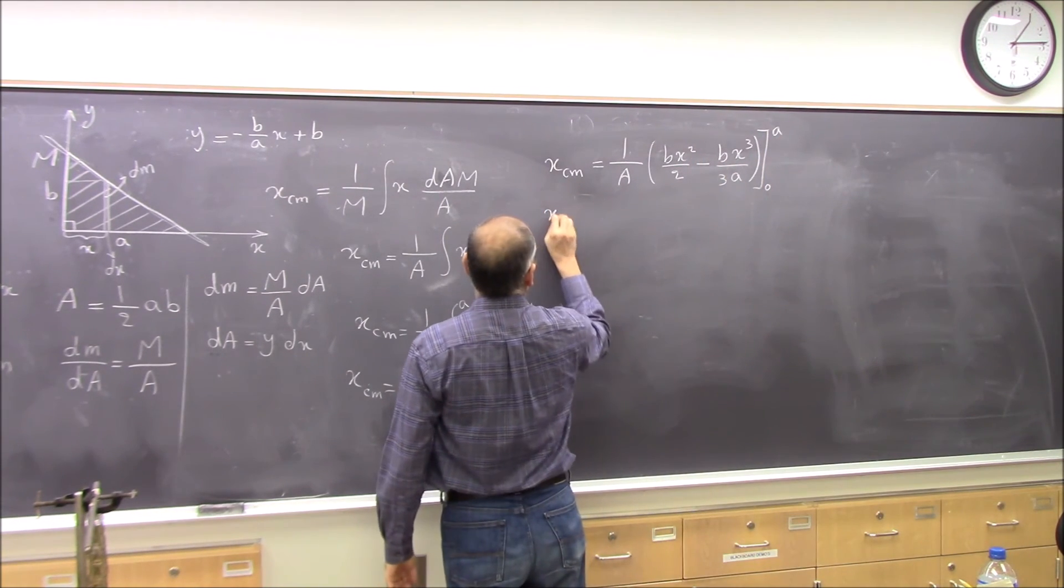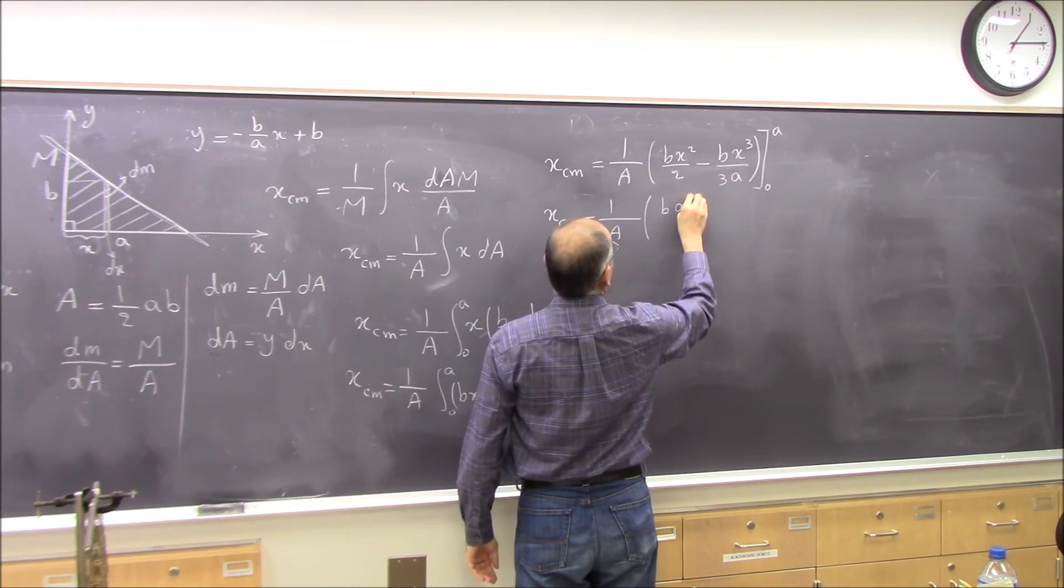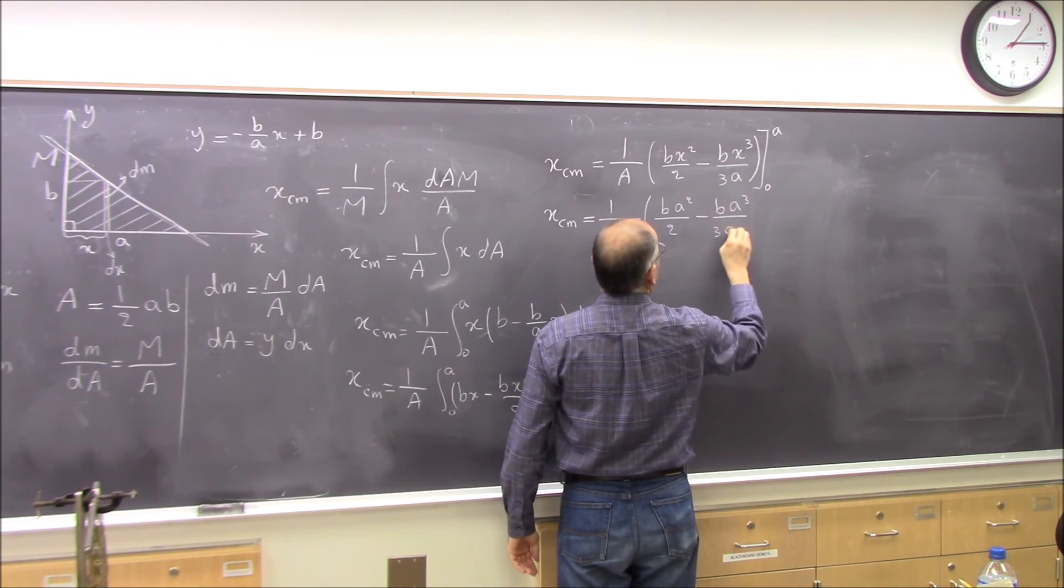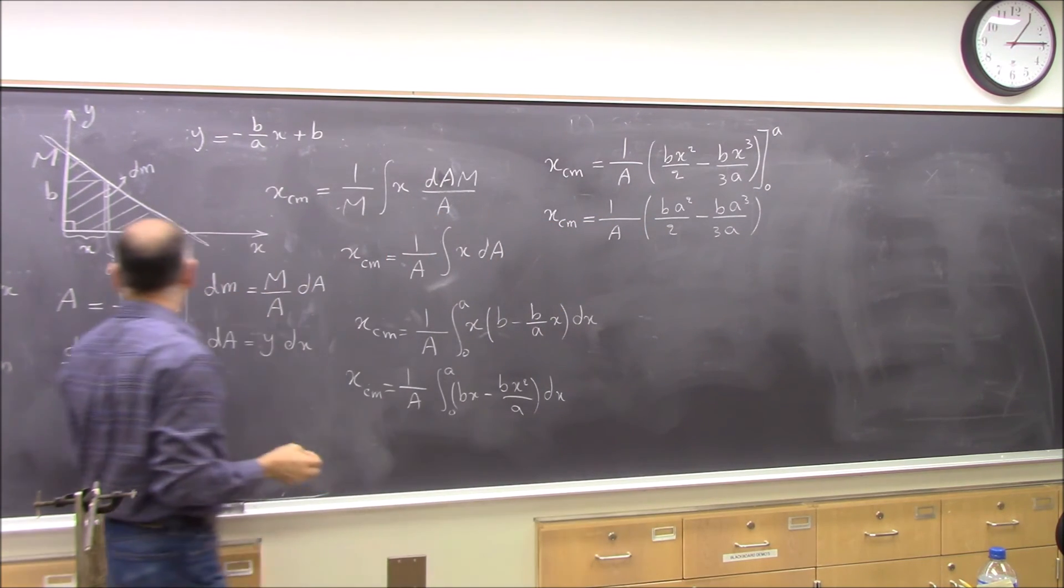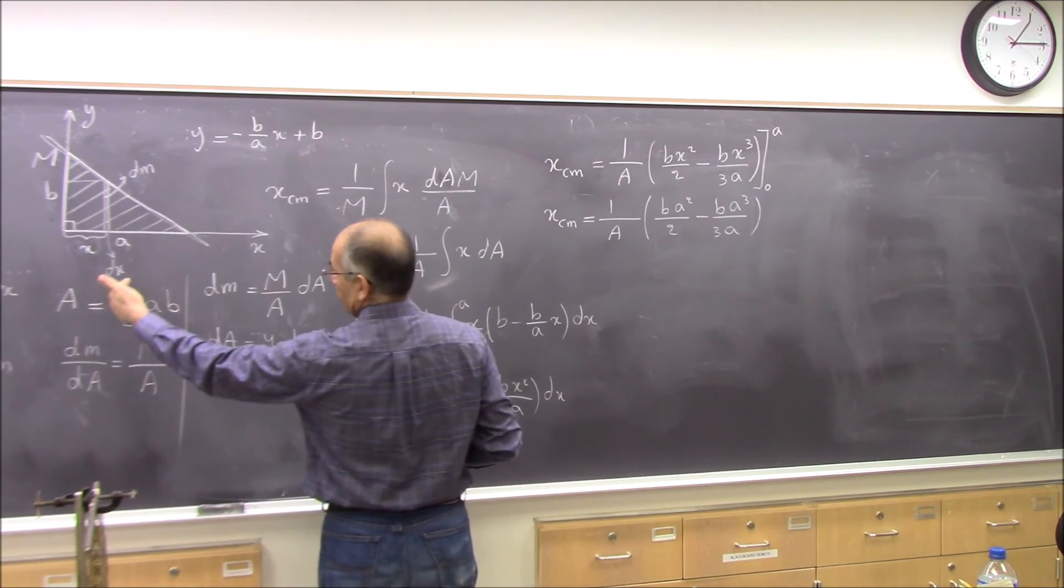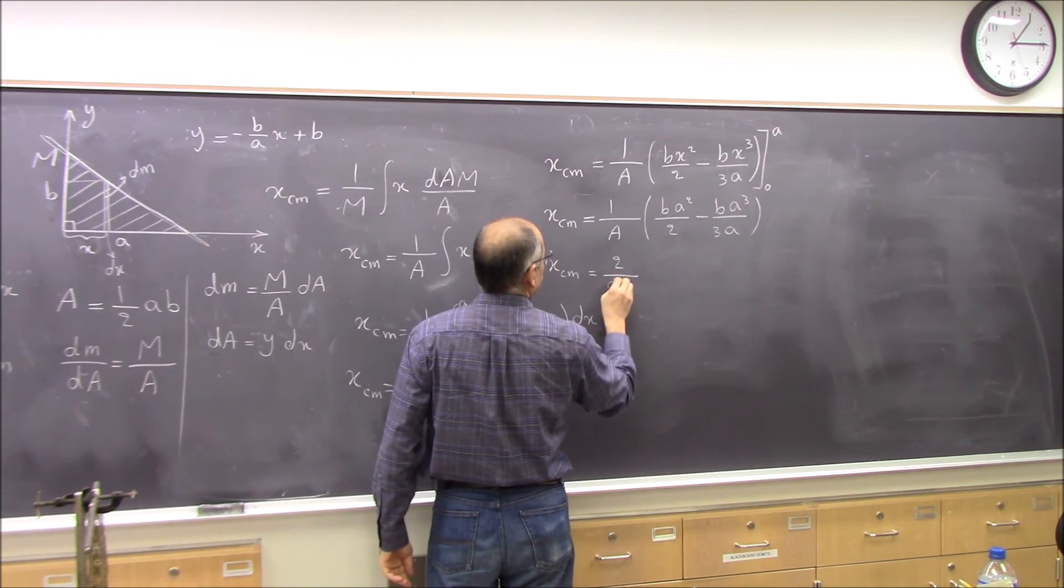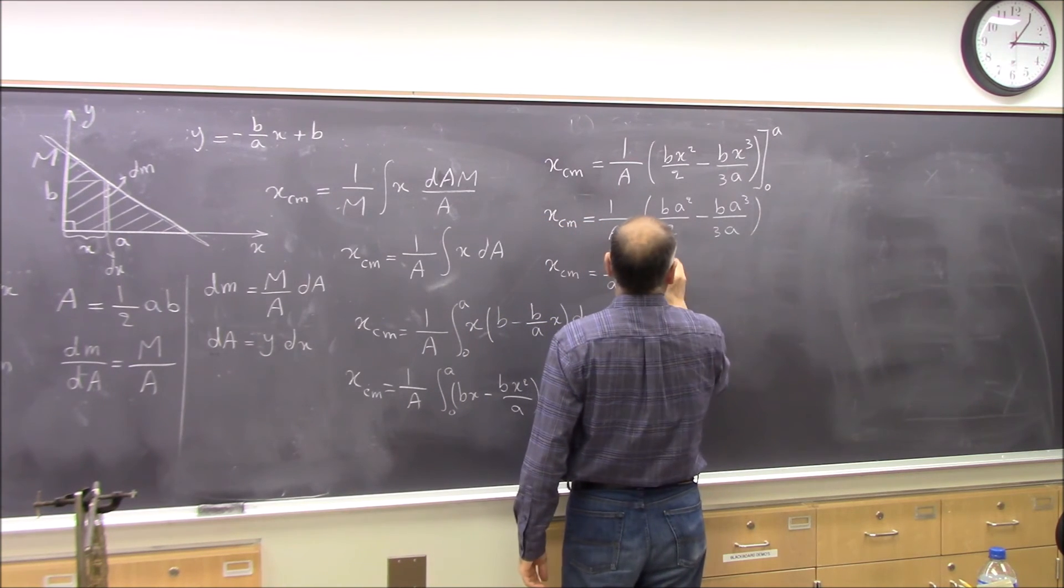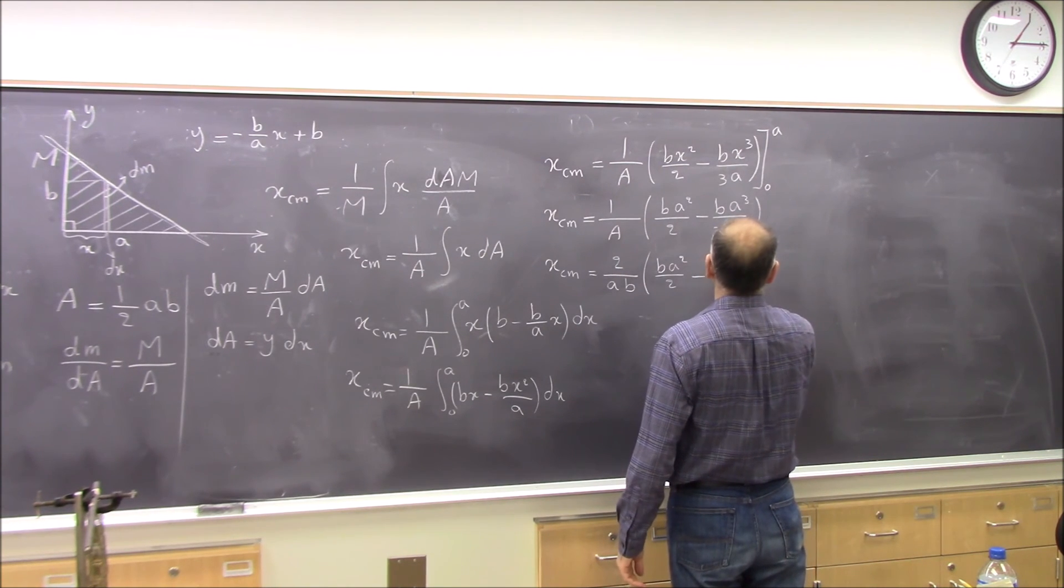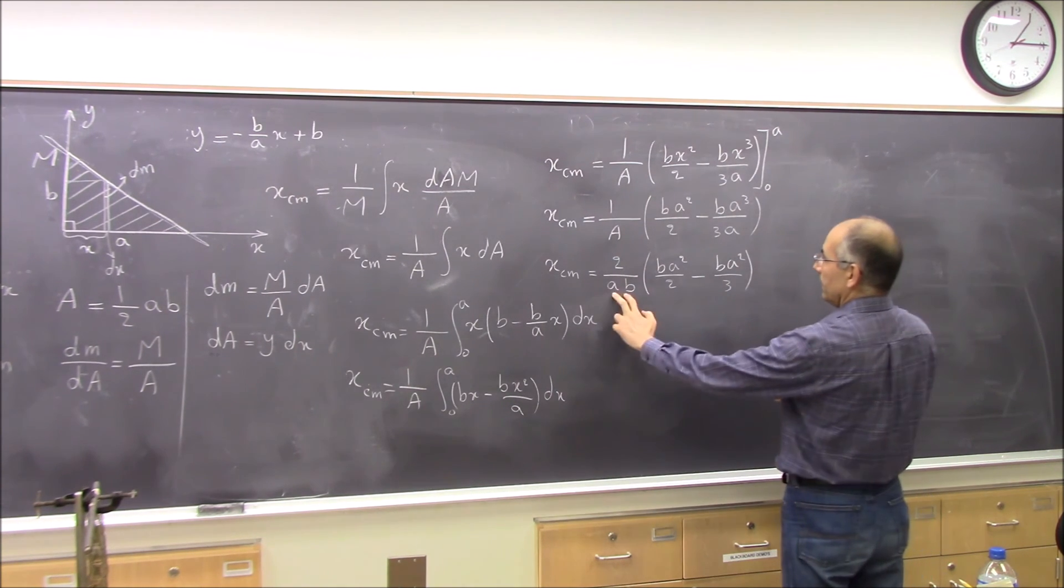So x of center of mass will be equal to 1 over A times b a squared over 2 minus b a cubed over 3a. Now we can put A equal to 1 over A times b. And 1 over A is 2 over ab. X of center of mass is 2 over ab times b a squared over 2 minus one of the a's cancels, so you get b a squared over 3. And a, b, a, b cancels. One of the a's cancels, can be factored.